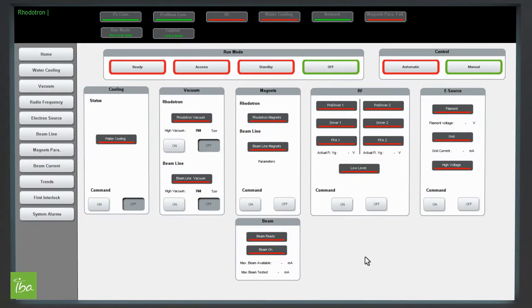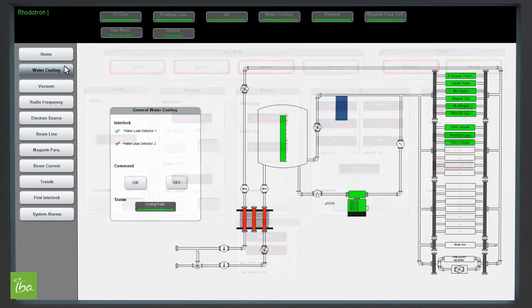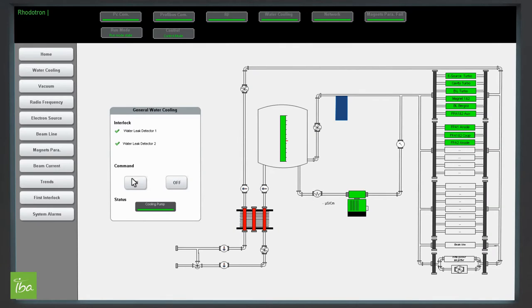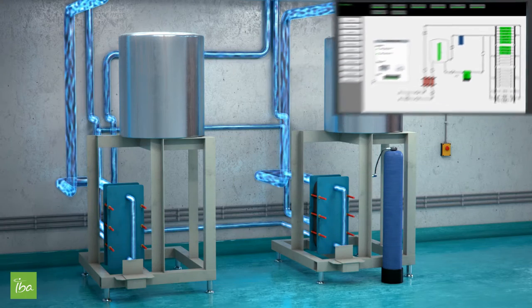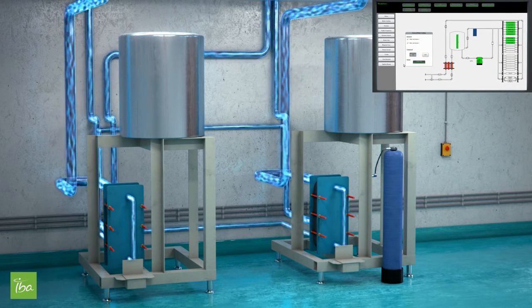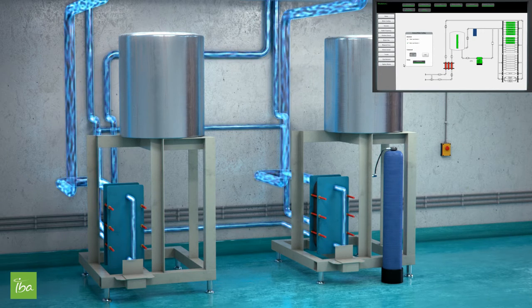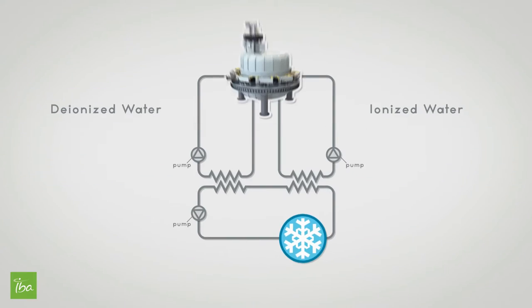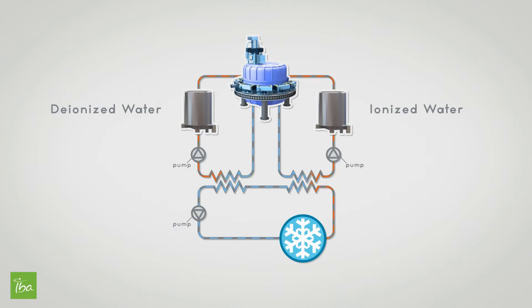Before activating the beam, each subsystem needs to be switched on. The cooling system brings the water into the different elements of the accelerator. Two different cooling systems are used, one with deionized water and one with ionized water, depending on the subsystem that needs to be cooled.